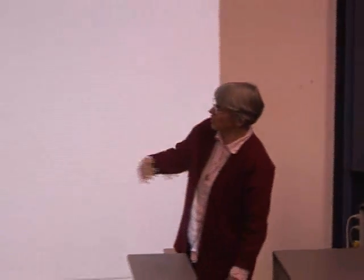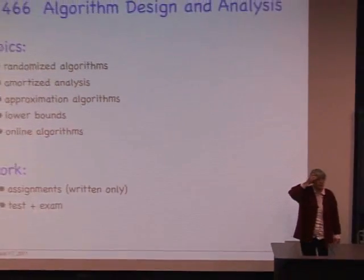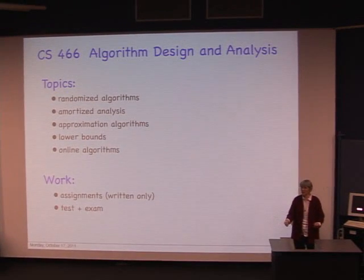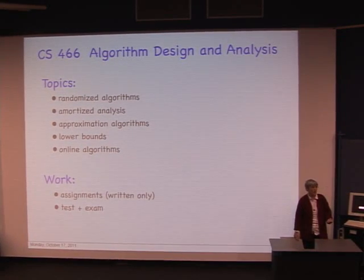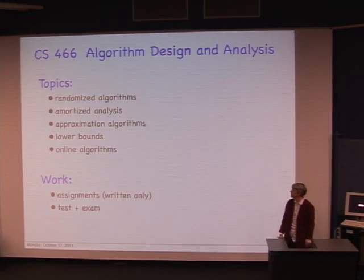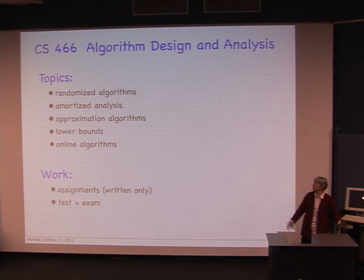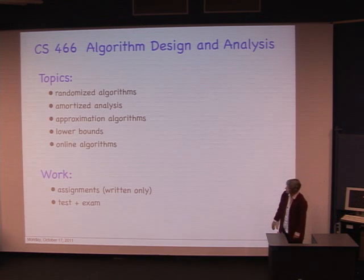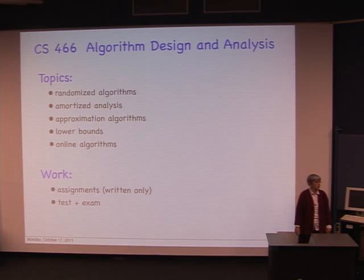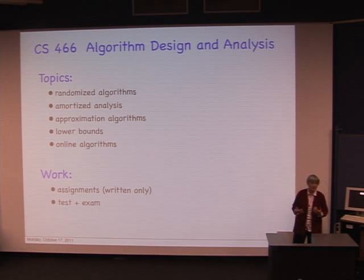The topics in CS 466 include approximation algorithms, which I've been discussing. We'll also talk about randomized algorithms — sometimes with random coin tosses you can do better than deterministic approaches. There's amortized analysis, a kind of averaging technique when you're asking many queries and care about average cost rather than worst case. And lower bounds and online algorithms — that's like the difference between packing a suitcase with all items in front of you versus packing groceries one by one as they come down the checkout.